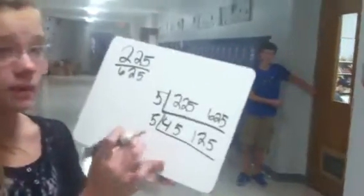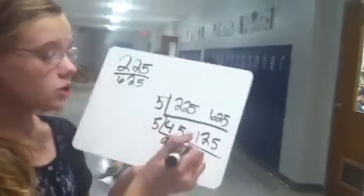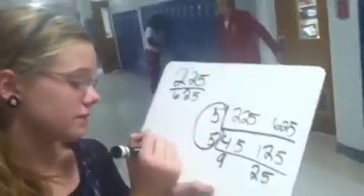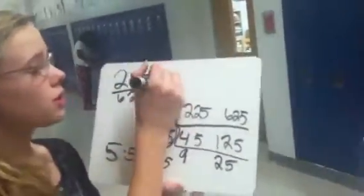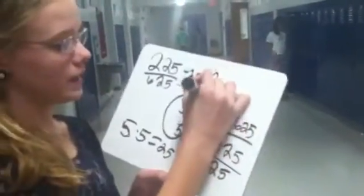Then 45 divided by 5 is 9, and 125 divided by 5 is 25. You cannot find a number that goes into both of these, so those would be your last numbers. Over here you multiply your side numbers: 5 times 5 equals 25. So in your fraction you divide by 25, and you get 9 over 25.